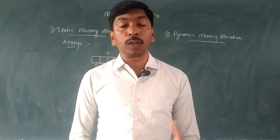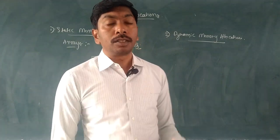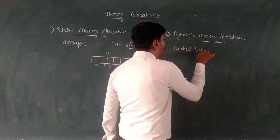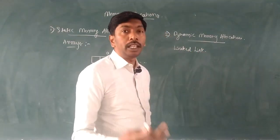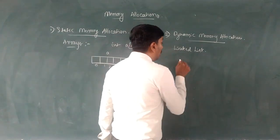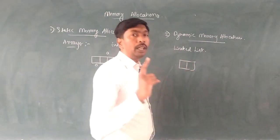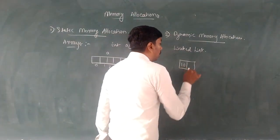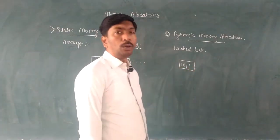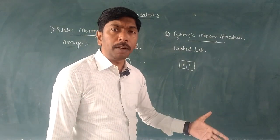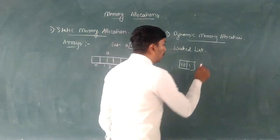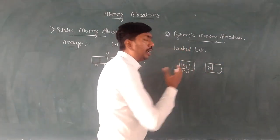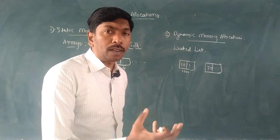In dynamic memory allocation, we can increase or decrease memory blocks at the time of execution. We have the linked list concept - in a linked list, if I need one element, I create one node. Each node stores one element. At the time of execution, I can create a new node. For example, a node is created with value 20 and assigned address 1000.